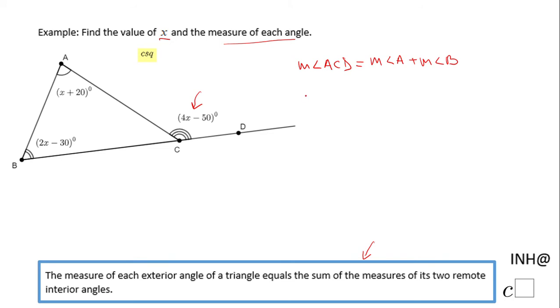So now we're going to replace these three measures with the expressions given. 4x minus 50 is the measure of angle ACD, which equals the measure of angle A, x plus 20, and the measure of angle B, 2x minus 30. So we have 4x minus 50 on the left side.